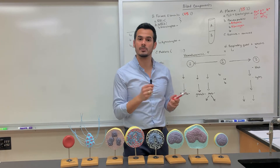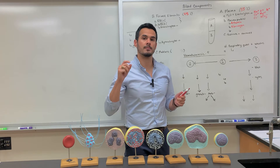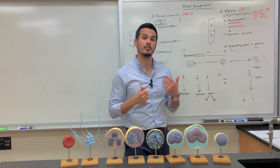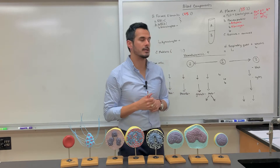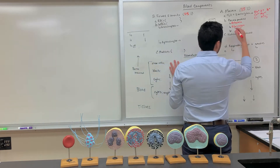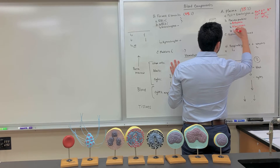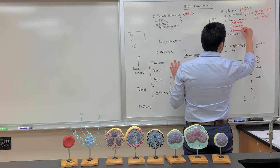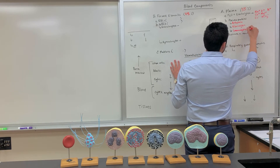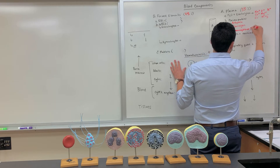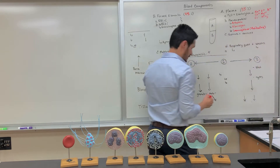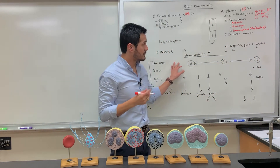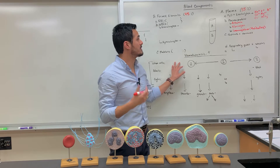So whenever a blood vessel ruptures, fibrinogen is one of those players. You also have immunoglobins — this is just a fancy term for antibodies. Antibodies or immunoglobins are components of the immune system within the body.